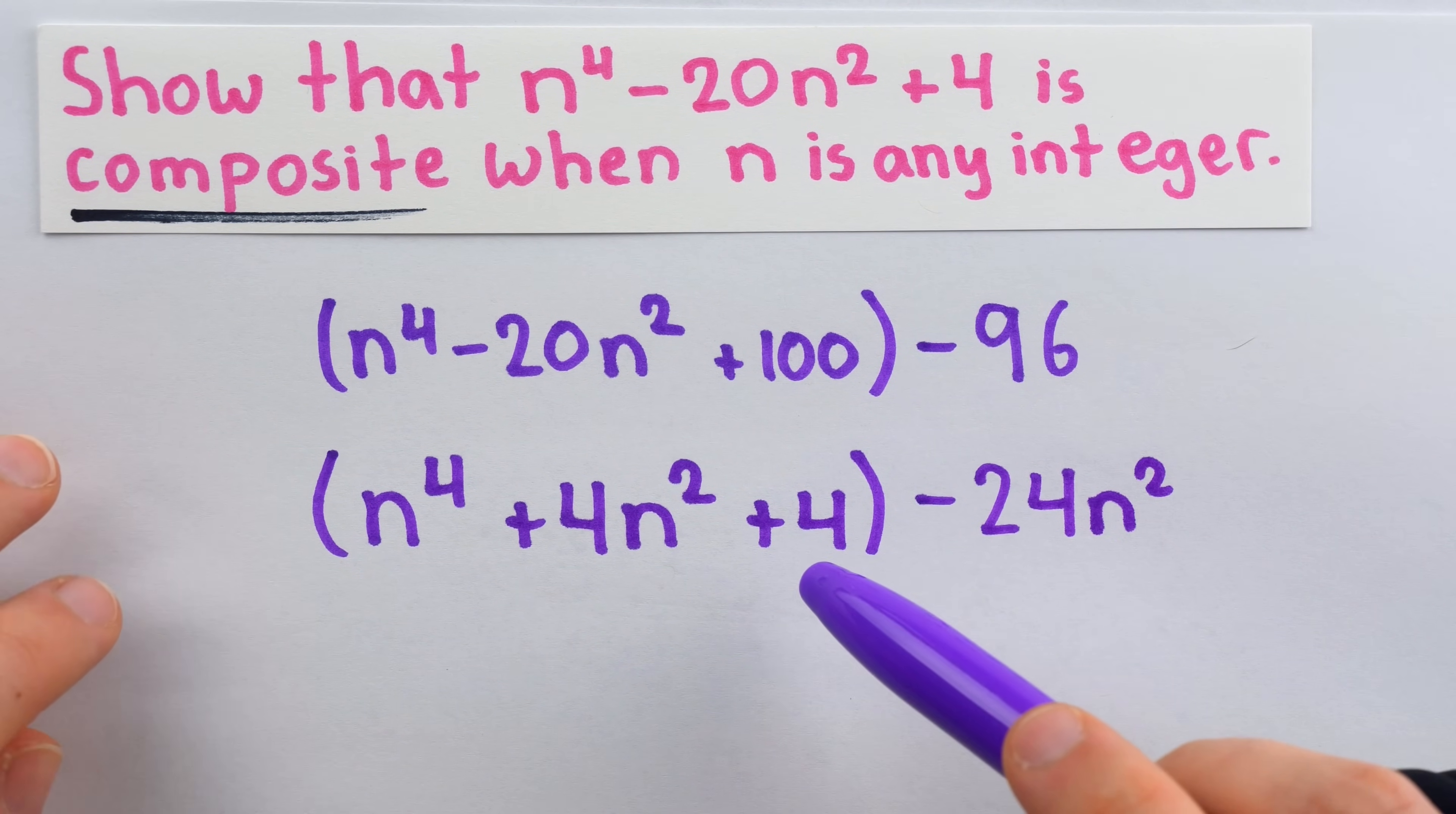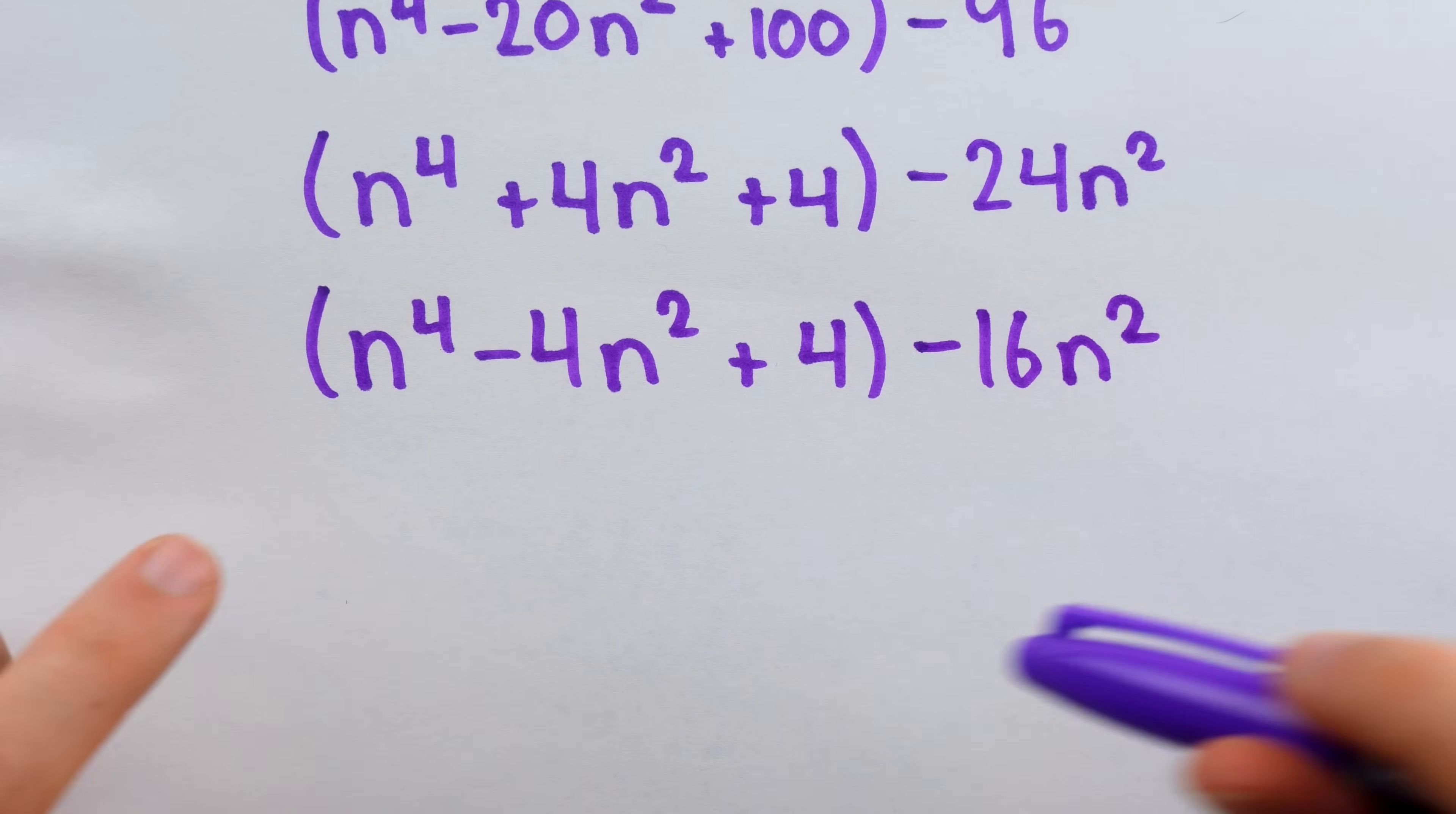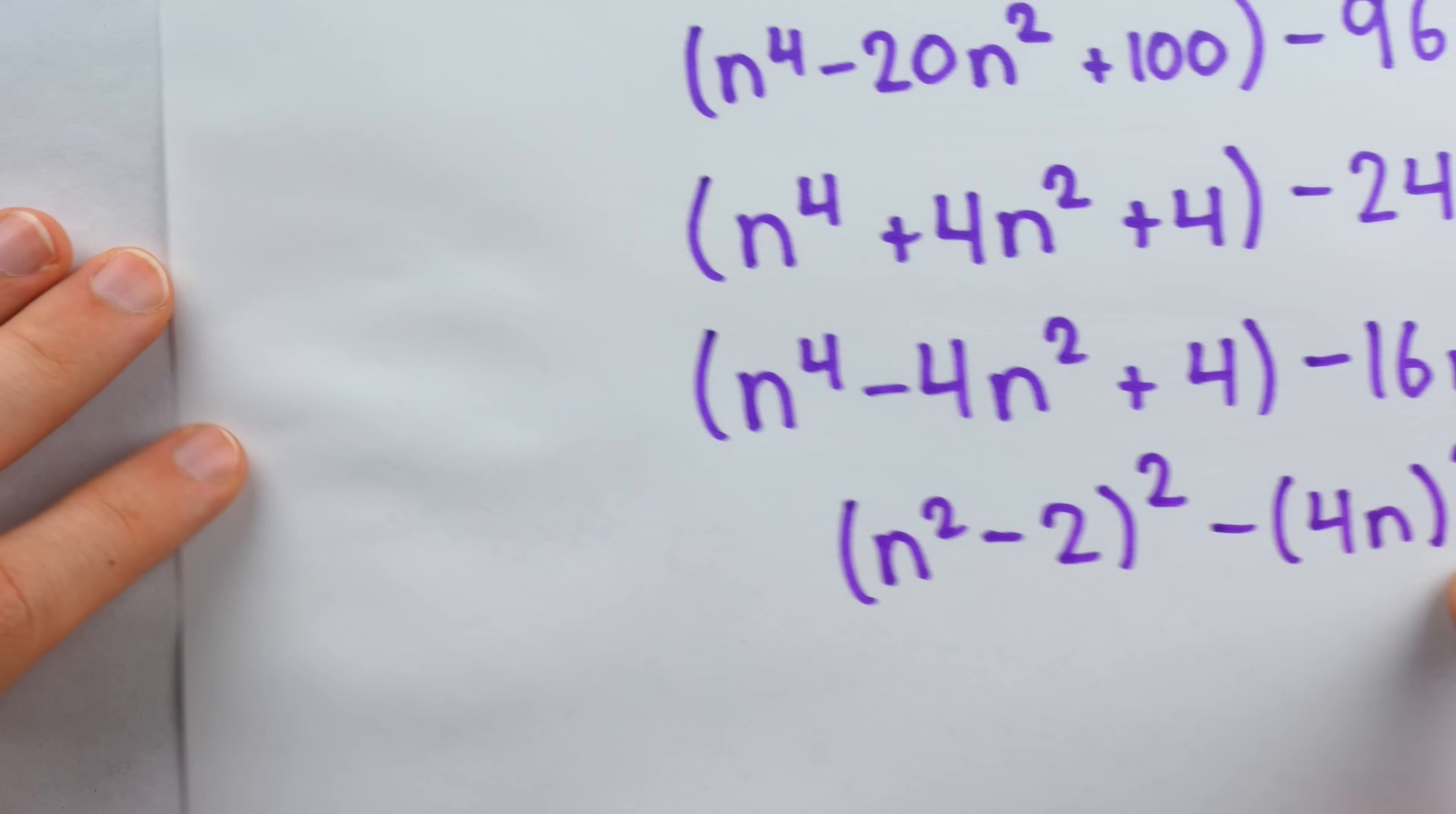But we haven't exhausted all of our options. Instead of plus 4n squared, this middle term could be minus 4n squared. In this case, to get back the original minus 20n squared, we'd have to put minus 16n squared on the outside. And okay, now this is what we're looking for. This is a perfect square. This is n squared minus 2 squared. And of course, 16n squared is the square of 4n. So now we do have a difference of squares. This is equal to the original polynomial.